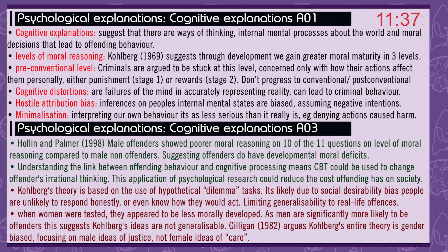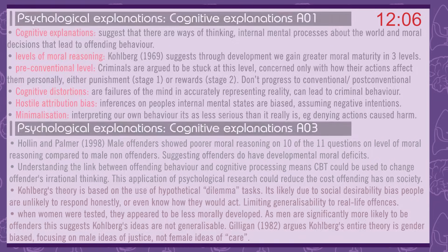However, Kohlberg's theory is based on hypothetical dilemma tasks. It's likely that due to social desirability bias, people are unlikely to respond honestly or even know how they would act, limiting generalisability to real-life offences. When women were tested, they appeared to be less morally developed; but as men are significantly more likely to be offenders, this suggests Kohlberg's ideas are not generalisable. Gilligan in 1982 argued that Kohlberg's entire theory is gender-biased, focusing on male ideas of justice rather than female ideas of care.